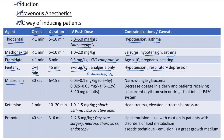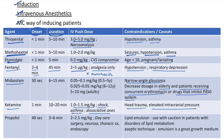Midazolam is a benzodiazepine and is contraindicated in narrow angle glaucoma. We have to decrease the dose of midazolam in elderly patients and those receiving concurrent erythromycin or drugs that inhibit the P450 system. Ketamine is given in the dose of 1 to 1.5 mg/kg and is used in patients with shock and bronchial asthma. Ketamine causes dissociative anesthesia. Contraindications for ketamine are head trauma and elevated intracranial pressure.